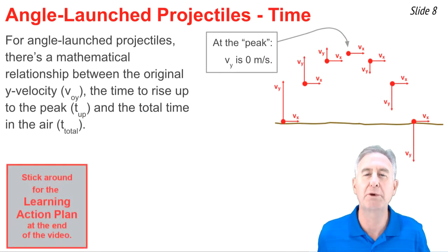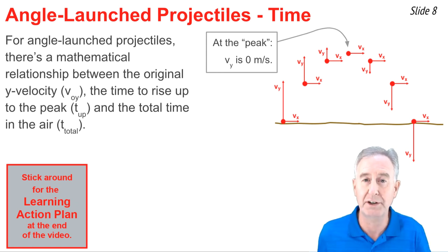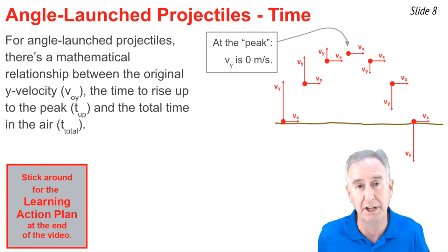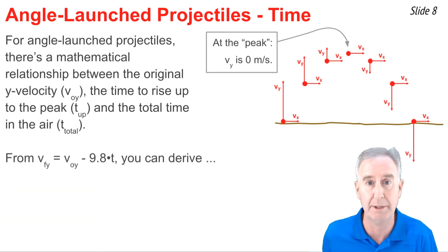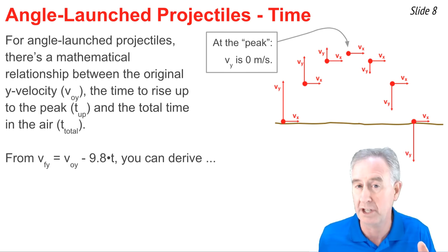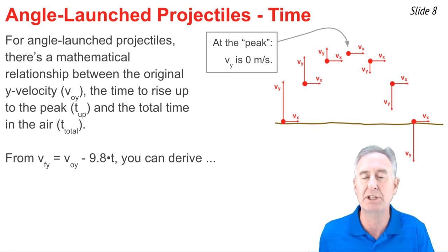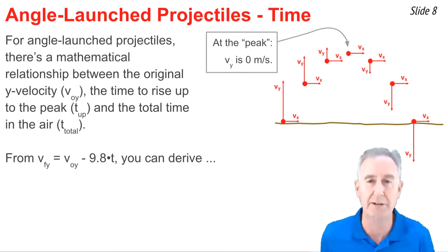There's a clear mathematical relationship between the original y velocity, the time it takes the projectile to reach its highest point, and the total time that it's in the air. And it's centered around this idea that at the peak of the trajectory, the y velocity is zero. We can use this fact and this equation in order to derive an equation for the time it takes to get to the peak. We would just simply put zero in for VFy and say zero equal the original y velocity minus 9.8 times the time up. We could add 9.8 times t up to both sides and divide through by t in order to get the relationship that the time up to the peak is equal to the original y velocity divided by 9.8.